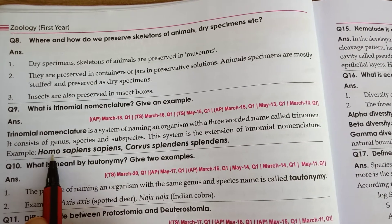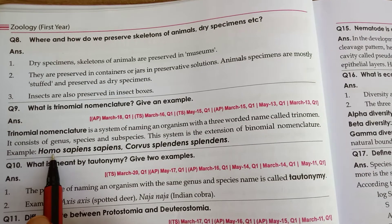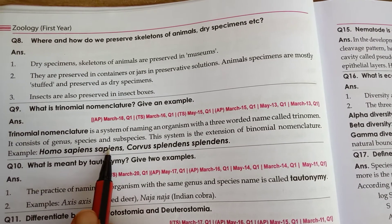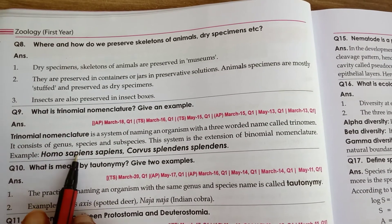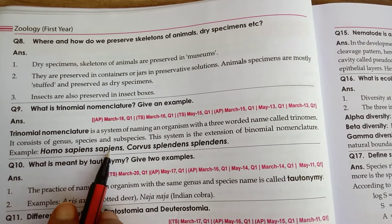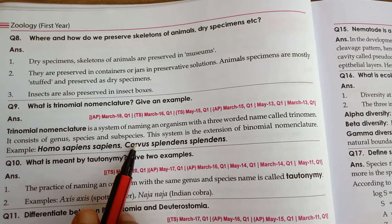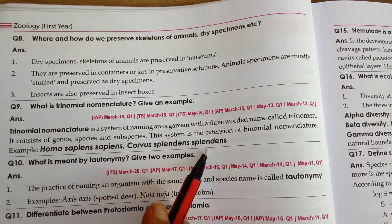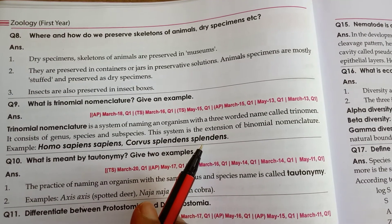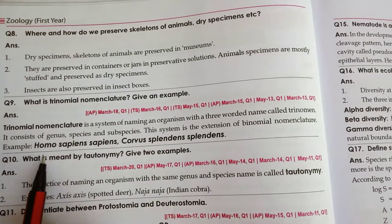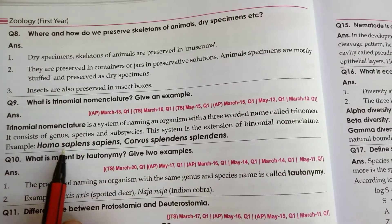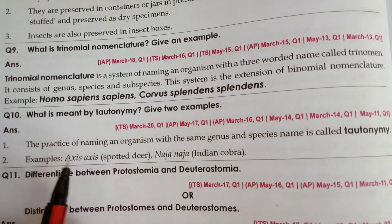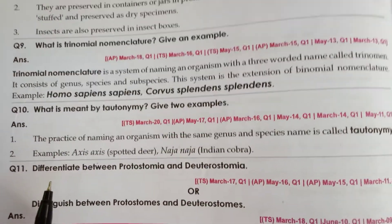For example, Corvus splendens splendens is the trinomial scientific name for the crow. Homo sapiens is the scientific name for human beings. Genus, species, and subspecies — these three form the trinomen.